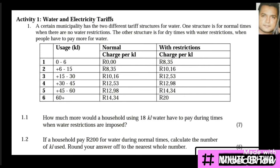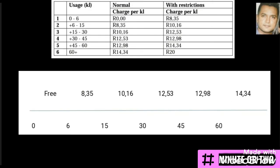In some exam questions they give you two tariffs — domestic tariffs and commercial tariffs — and in your question they'll direct you which one to work with. This is something to look for in your exams when starting your question. I've chosen the number line method here. Remember there are two methods: the number line method and the table method.